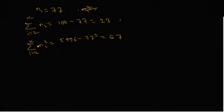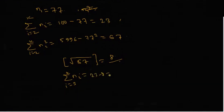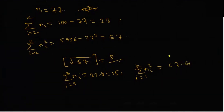Now we need to find natural numbers summing to 23 with sum of squares equal to 67. Take the largest possible value: floor of square root of 67 is 8. If n2 equals 8, then summation of ni for i from 3 to k equals 23 minus 8 equals 15, and summation of ni squared equals 67 minus 64 equals 3.